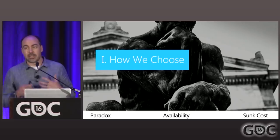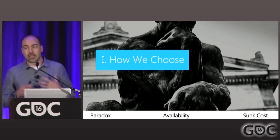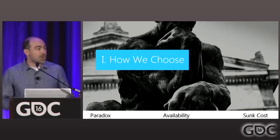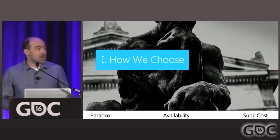How we choose is, of course, a huge topic, and there's no way I can cover it all in 30 minutes. So I wanted to give you three introductory concepts: the paradox, availability, and sunk costs. I'm going to talk about each one individually in a general context before moving on to showing you how you can use them in level design.